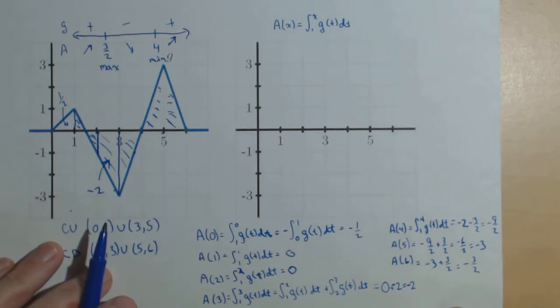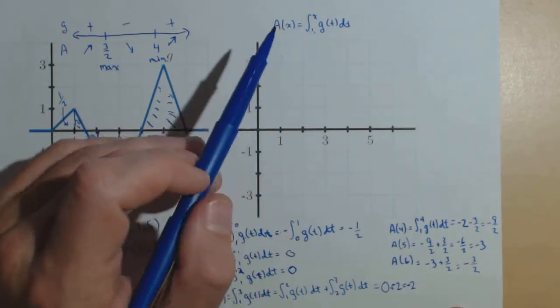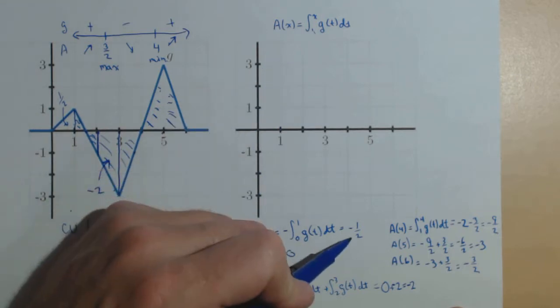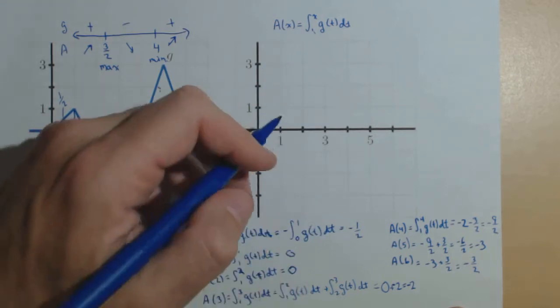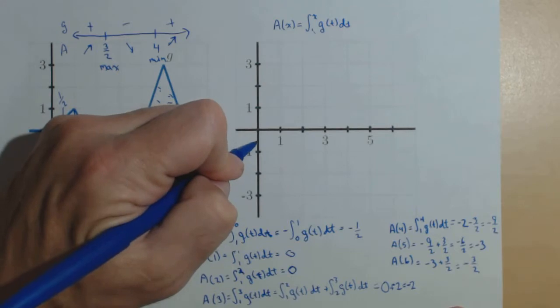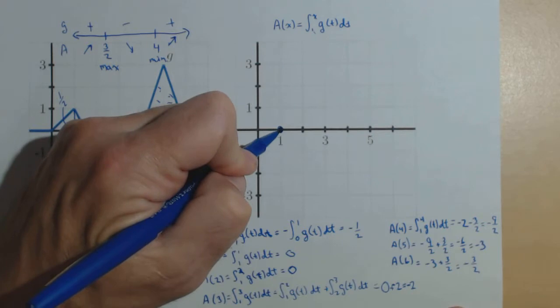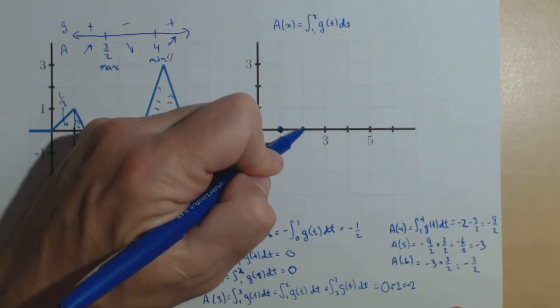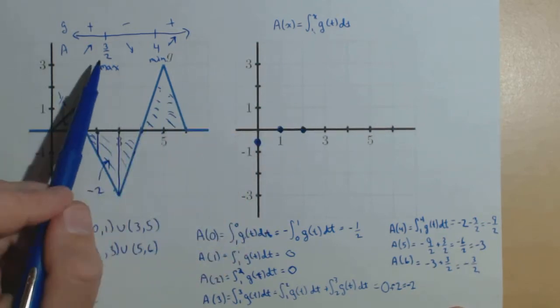We now have enough information to plot our, basically, our anti-derivative for this particular accumulation function. So, we know that at 0, it's at negative 1 half. At 1, it's at 0. And at 2, it's at 0.